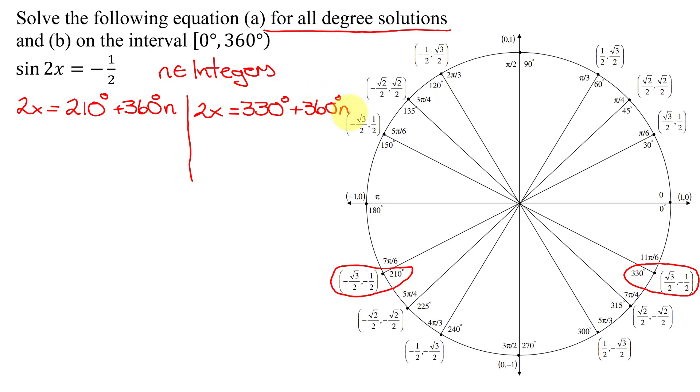Now, I can find x, and I'm going to have to divide all three parts of this equation by 2. So I'm going to get x equals 210 divided by 2 is 105 degrees, plus 360 divided by 2 is 180 degrees times n. So there is part of my solution for part A.